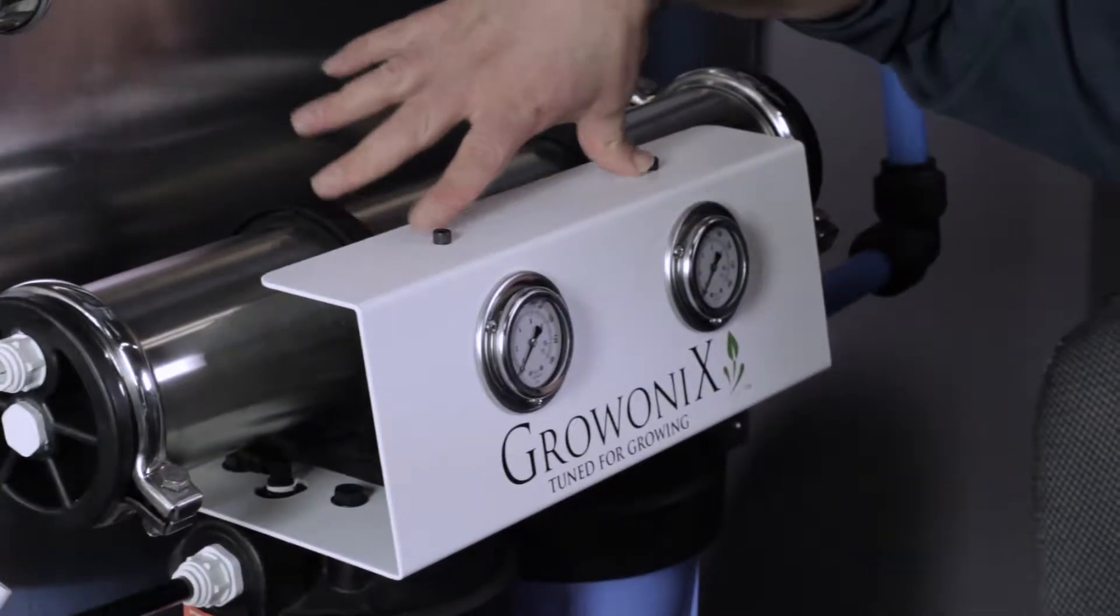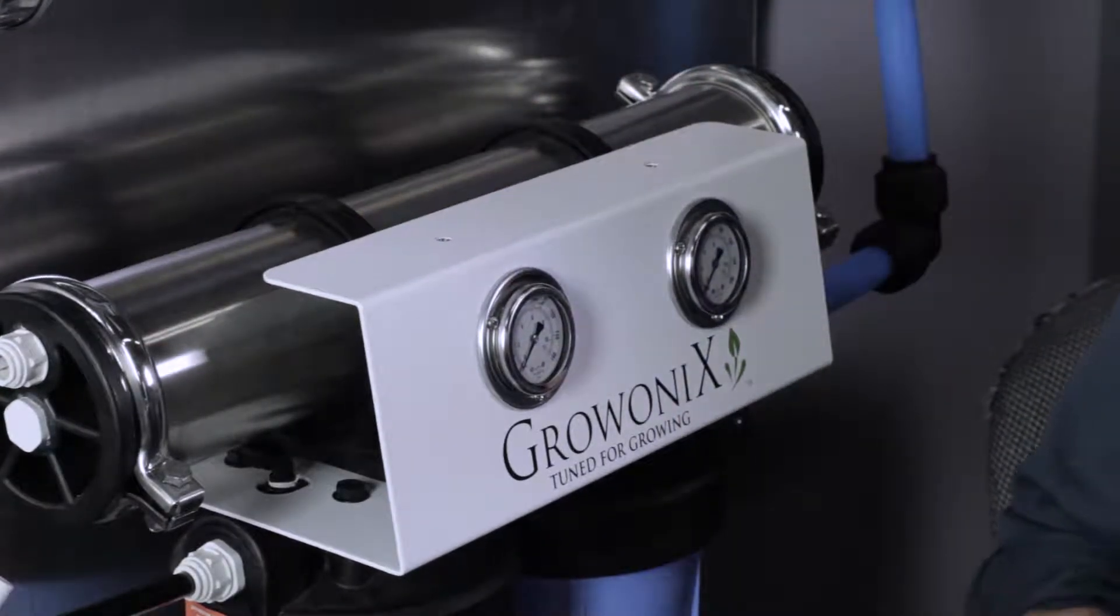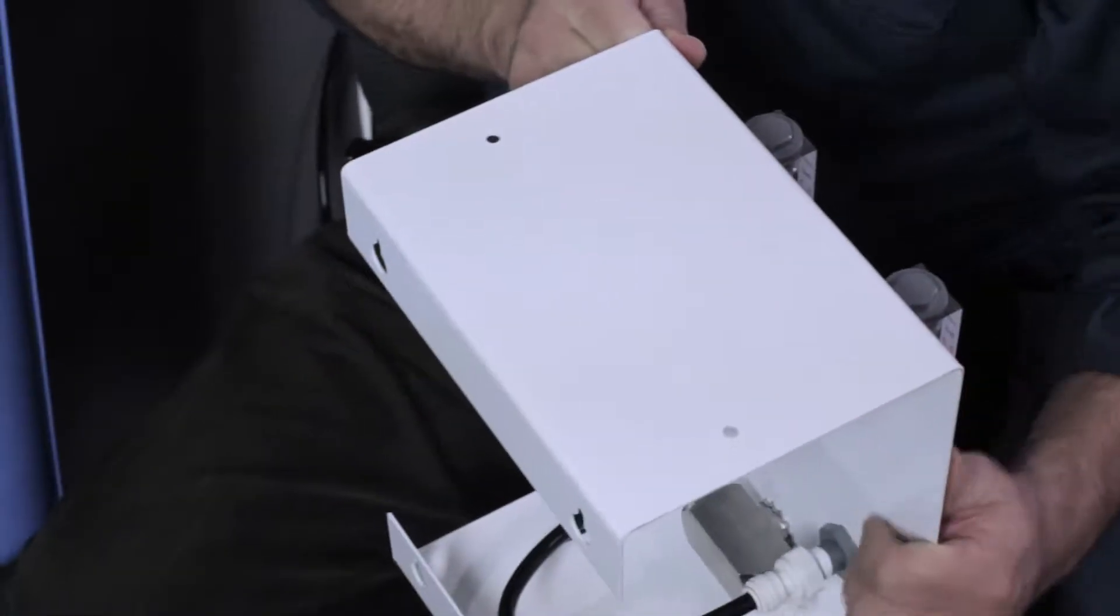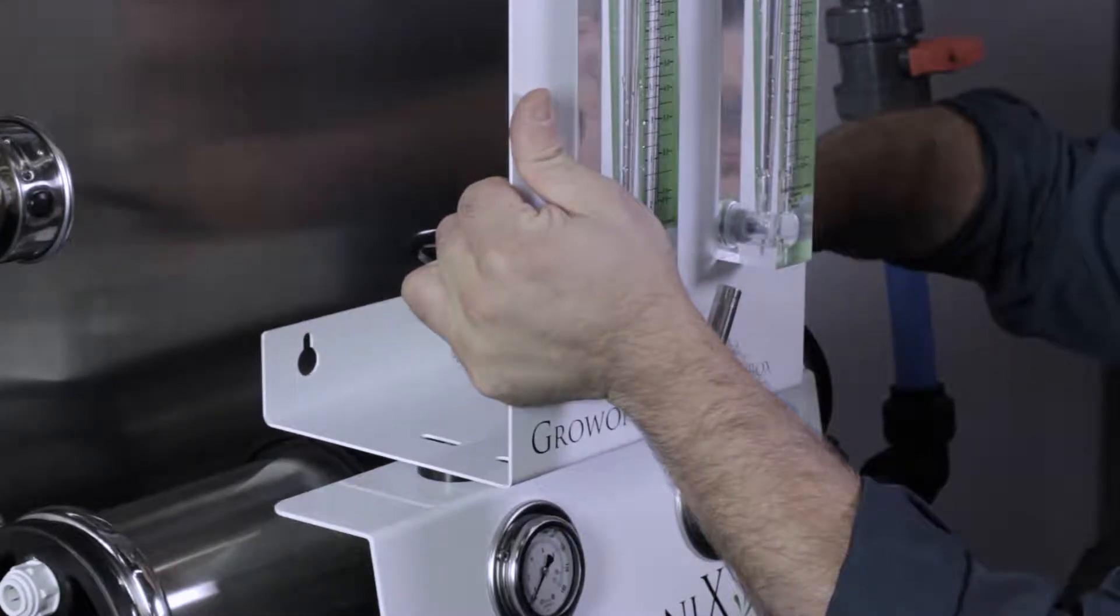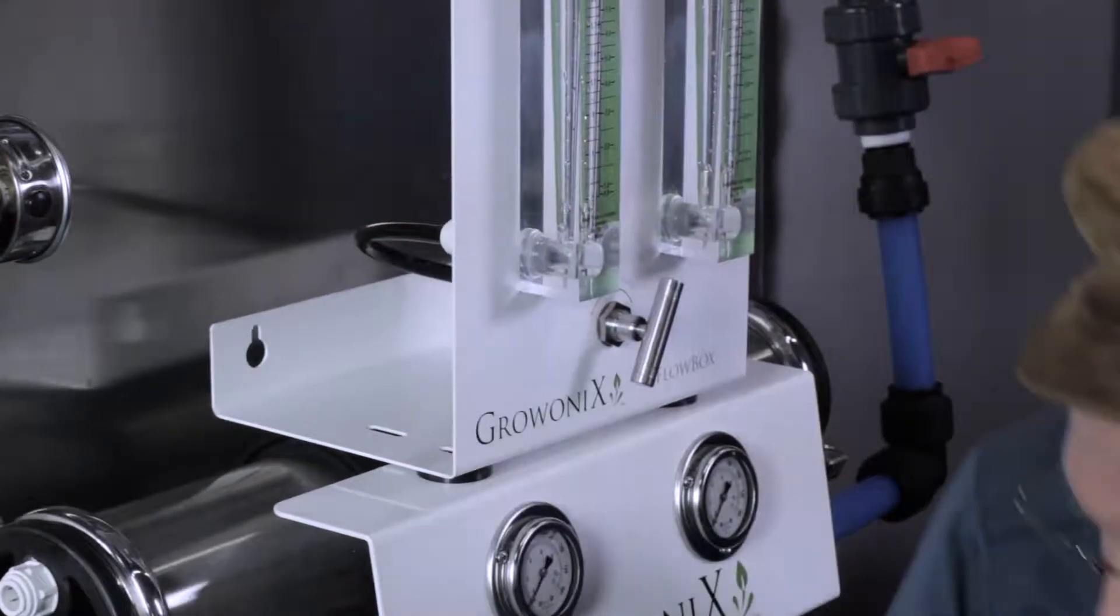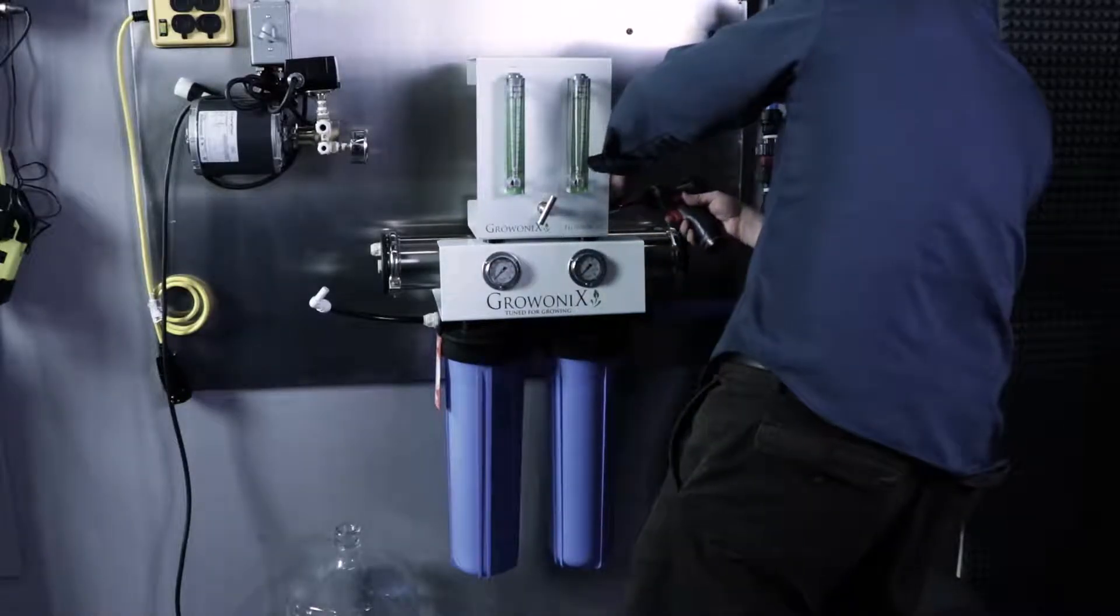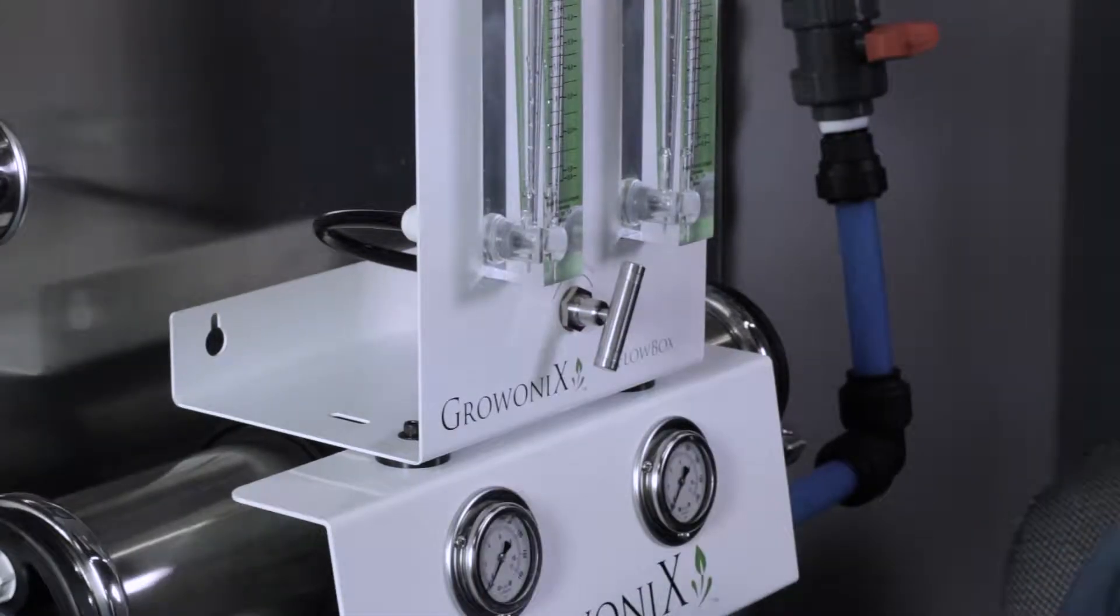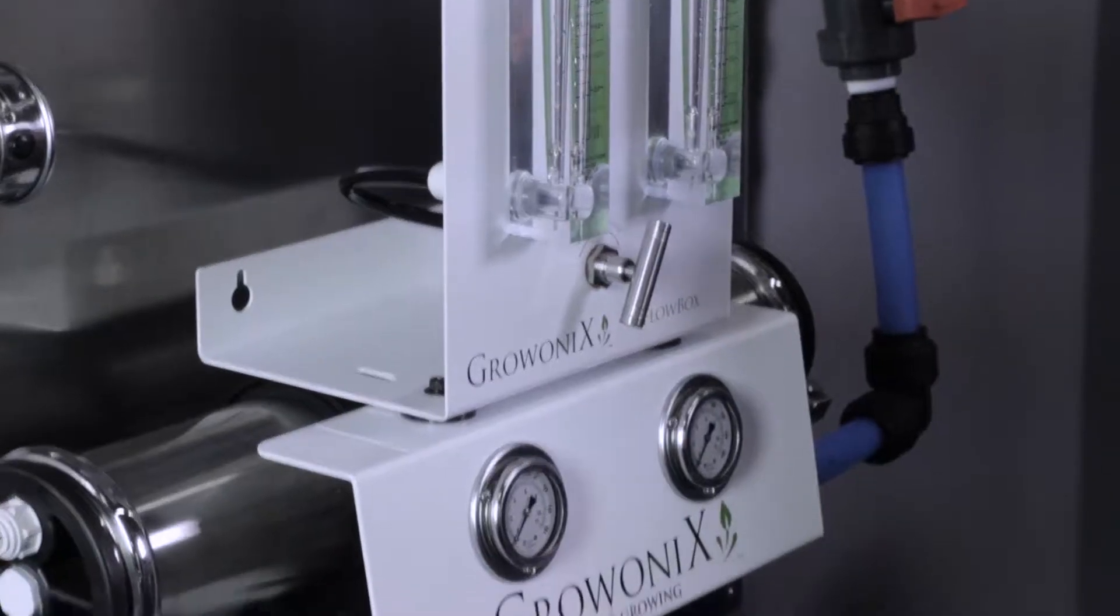To do that we're going to remove these quarter 20 socket cap screws on the top. This is also a mounting point for the UV if you want. You get some spacers and we're simply going to put this up top like this. Now the flow box is mounted. So the next thing I'm going to do is on this particular unit, because it's panel mounted, I'm going to plumb the input. I usually plumb the outputs first, but for here I'm going to plumb the input.